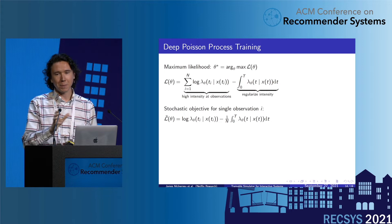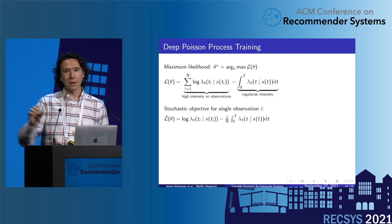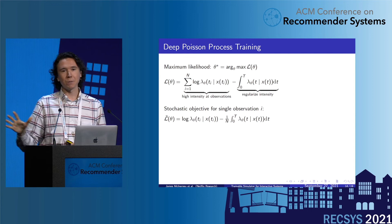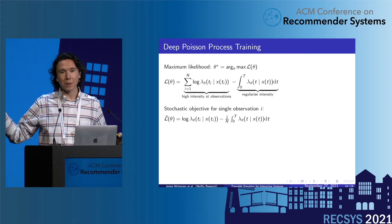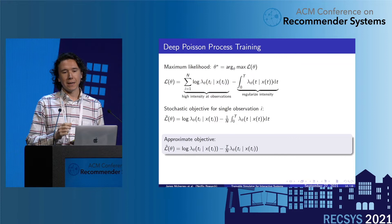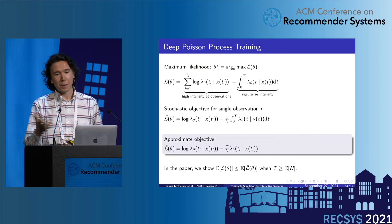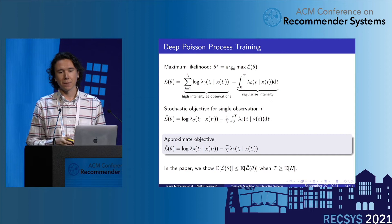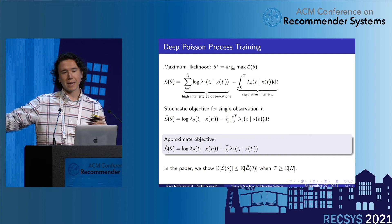In the paper we describe an approximate objective that evaluates lambda and its gradients only at the sampled times, and we show this yields a lower bound in expectation on the true objective under certain conditions — which can always be met by rescaling the time scale.